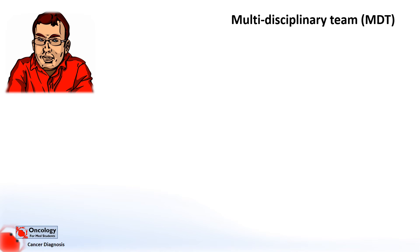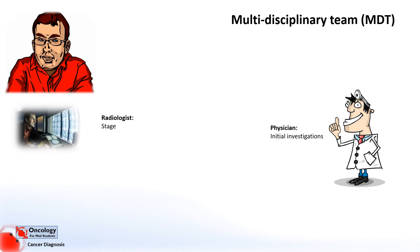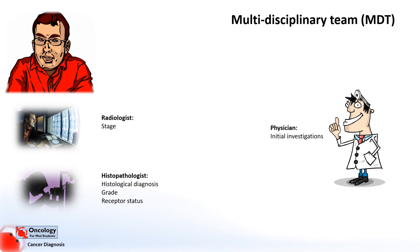Usually the people who make up the MDT are the following. We have a physician — in this case a respiratory physician — who normally carried out the initial investigations, such as the bronchoscopy. We have the radiologist, who can look at the scan results and determine the stage of the cancer. We also have a histopathologist, who can determine the histological diagnosis, grade, and receptor status.